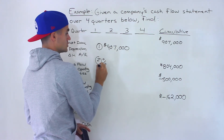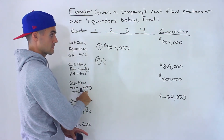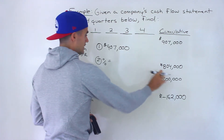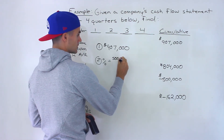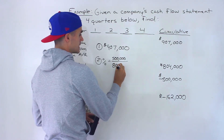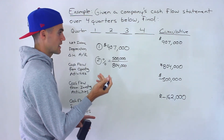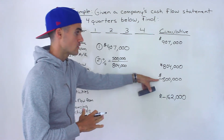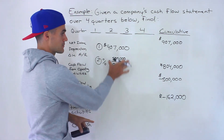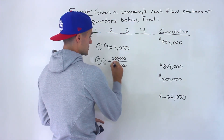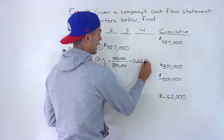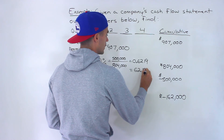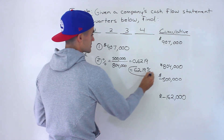Number two: what was the percentage of operating cash flow used for investing activities over the four quarters? So what we would do is take the negative $500,000 — but since we're getting a percentage, you would just put the positive amount, the absolute value of it. The negative is already implied in the question: they're saying how much of the operating cash flow, which is positive, was used for investing. So $500,000 divided by $804,000 gives us 0.6219 — rounded to four decimal places — which is 62.19%. That's the answer to number two.